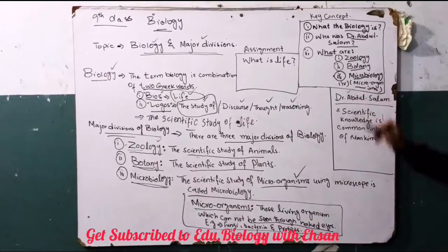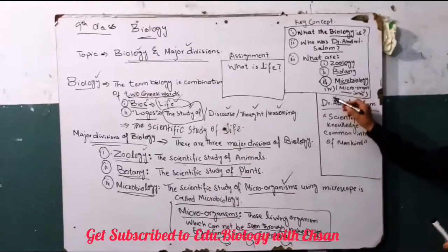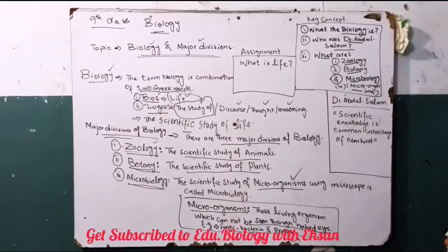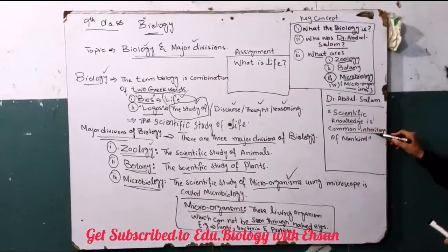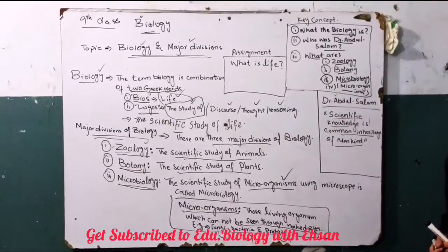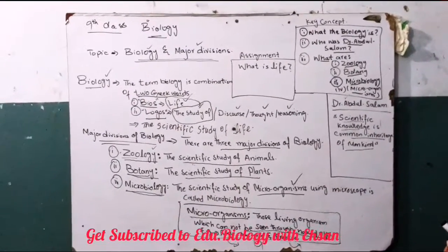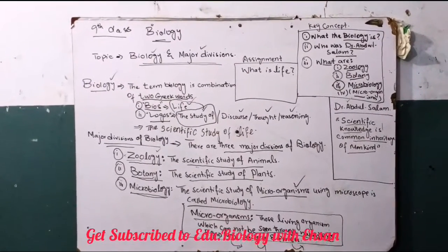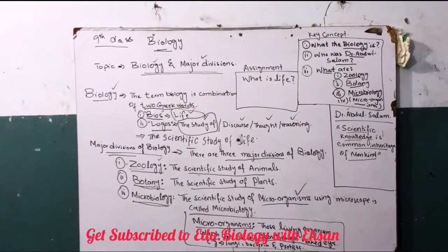Now we will discuss about Dr. Abdus Salam, who is a Pakistani scientist and a big figure in science. He says that scientific knowledge is the common heritage of mankind. Science is for all human beings.